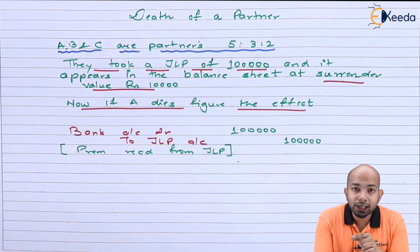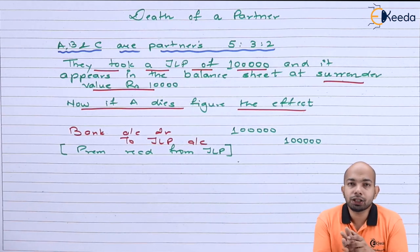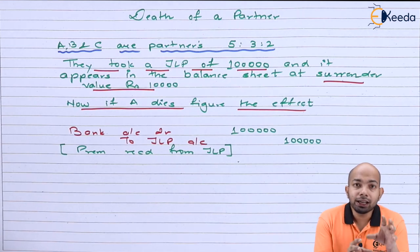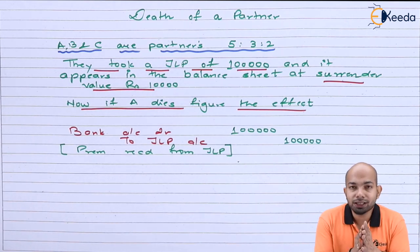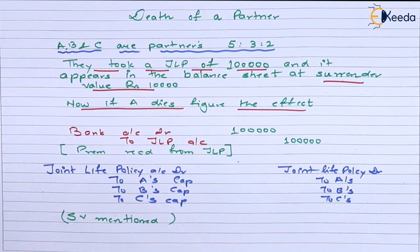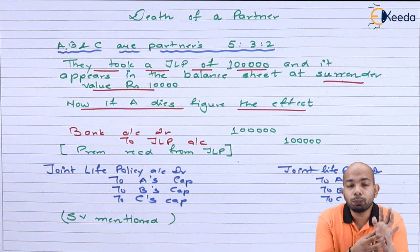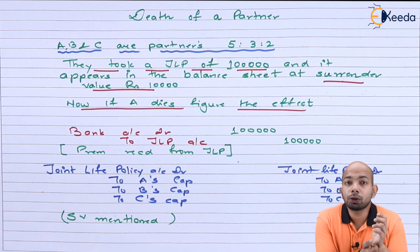There are two scenarios to deal with. In case the policy was mentioned at a surrender value of 10,000 in the balance sheet, versus if the same was mentioned as 1 lakh in the balance sheet — there is a massive difference. If you're mentioning it in the balance sheet as 10,000, the actual policy value is 1 lakh, meaning whenever the policy is received we are receiving an additional 90,000 as profit. What happens to that 90,000 is what we will be understanding here.